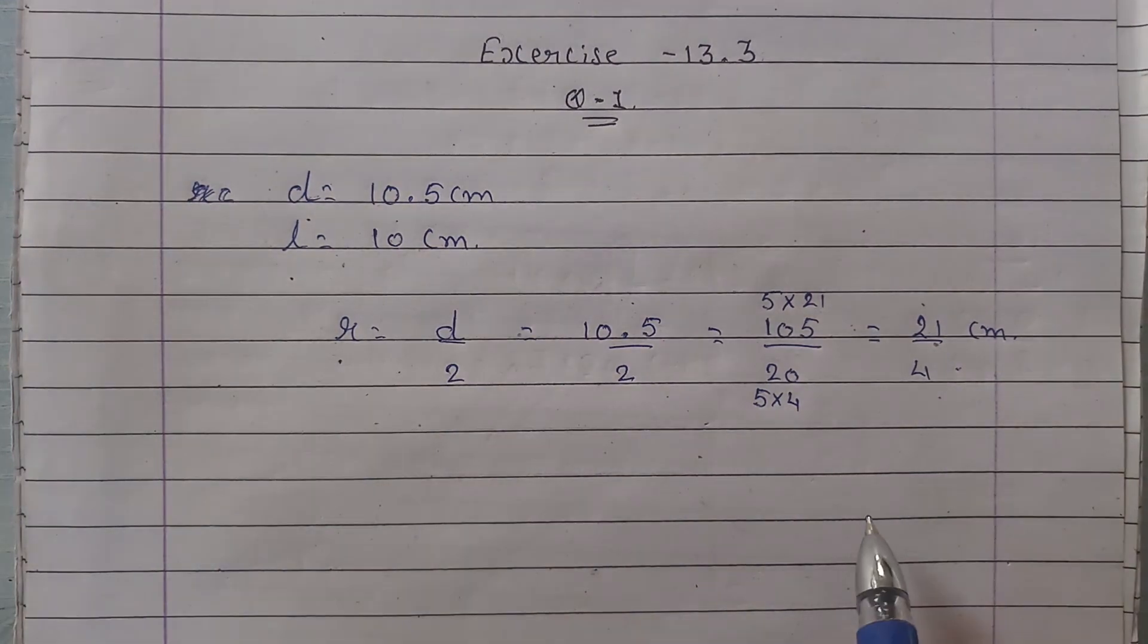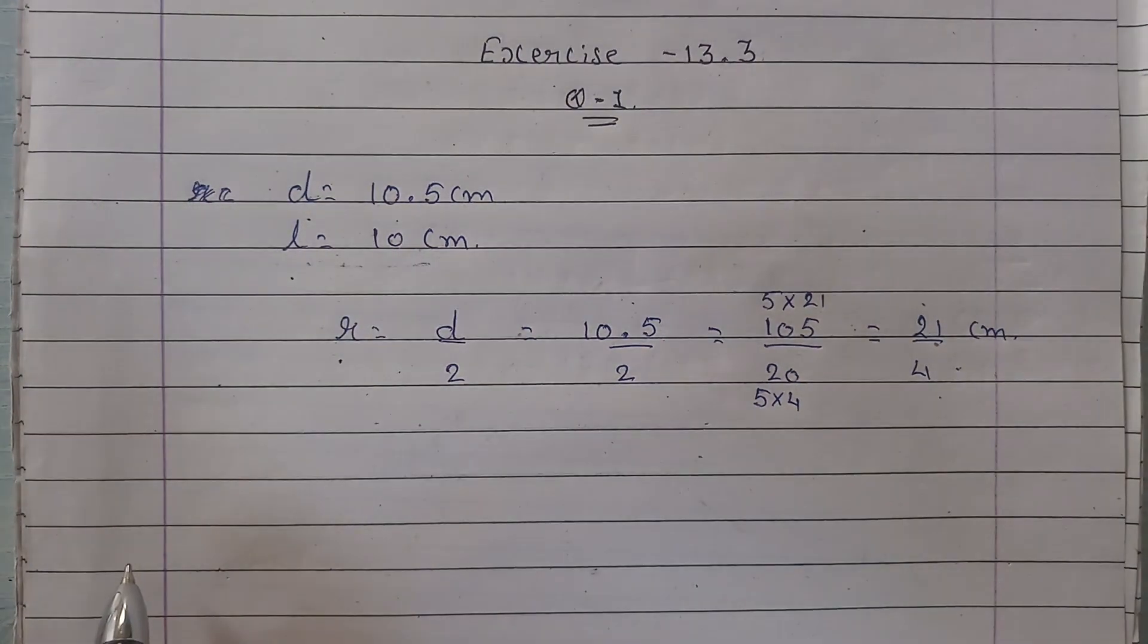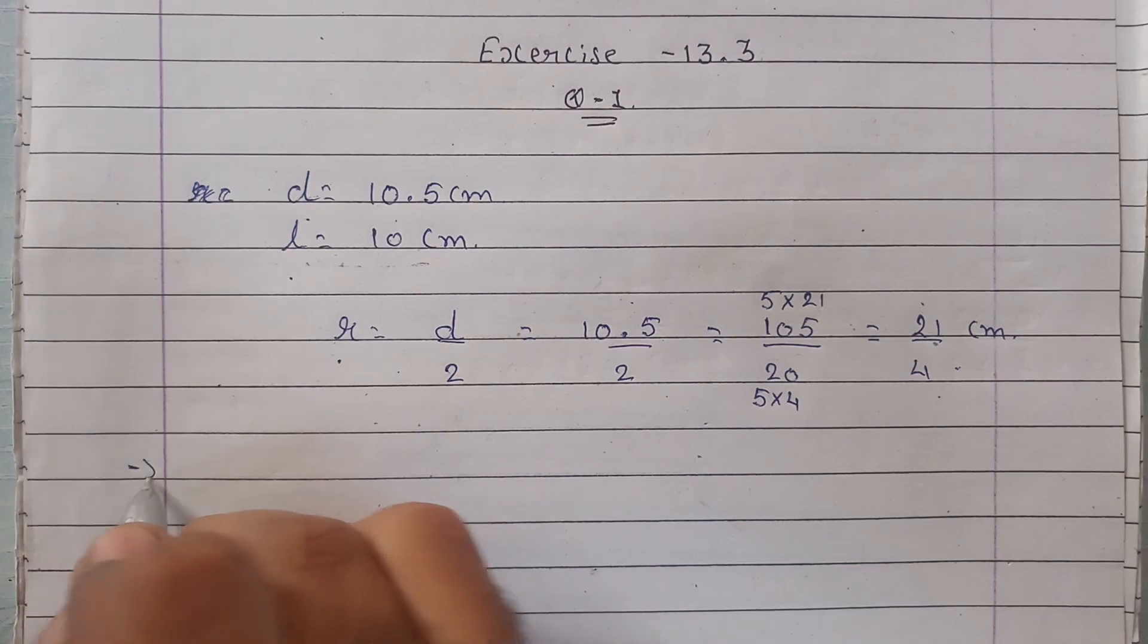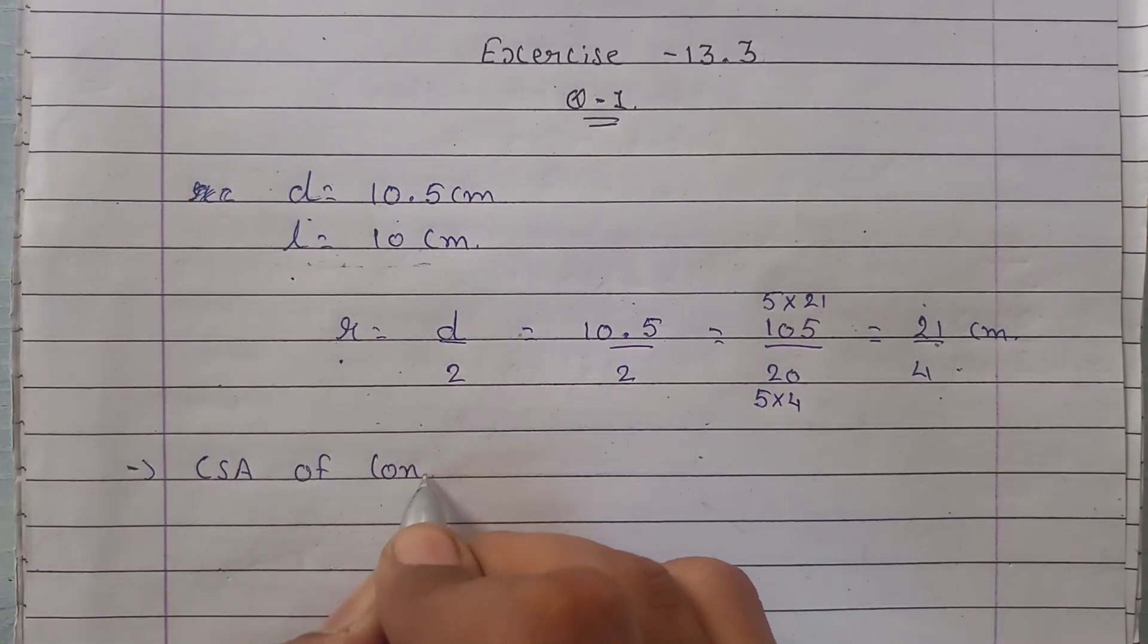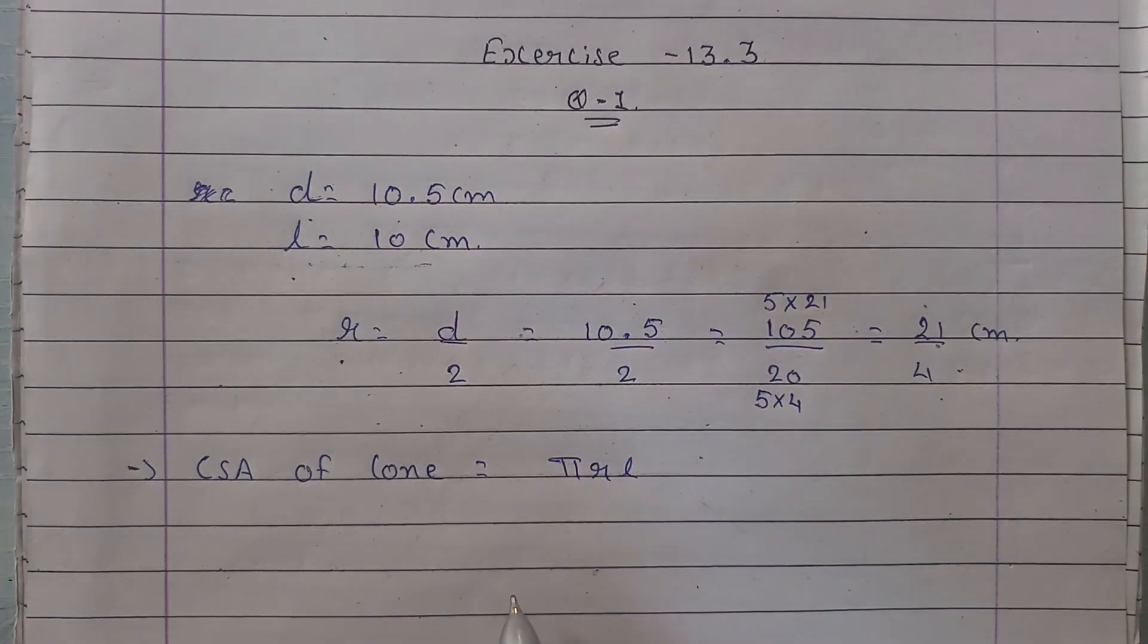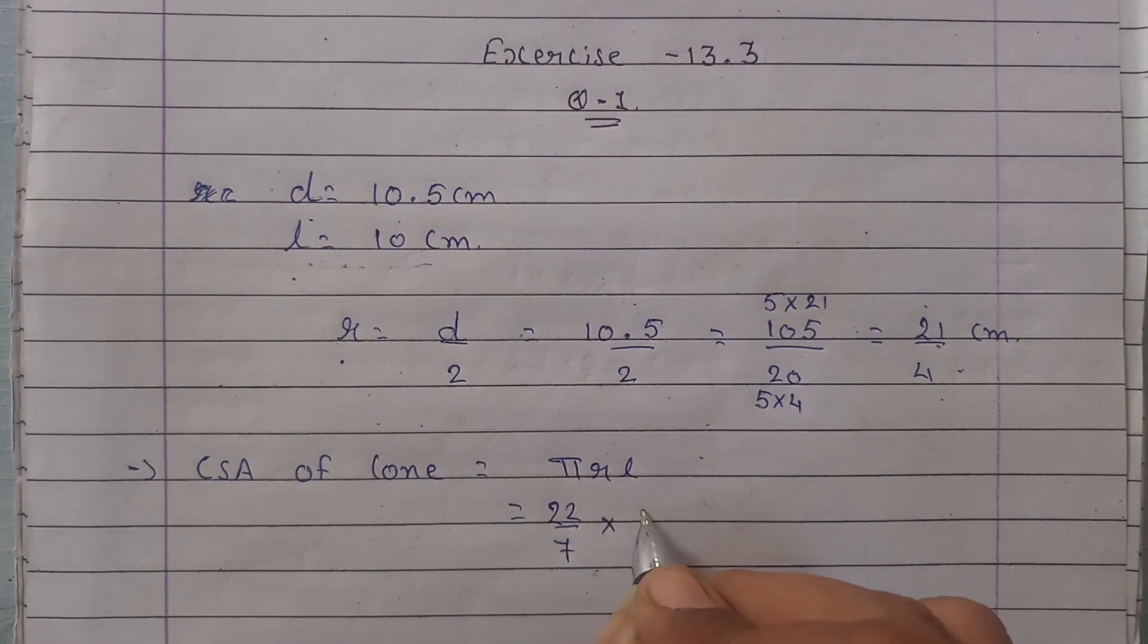So the radius of the cone is 21 upon 4 centimeters aur slant height hai 10 centimeters. Sab se pehle humme find karna hai curved surface area of cone, jiska formula hota hai πrl.